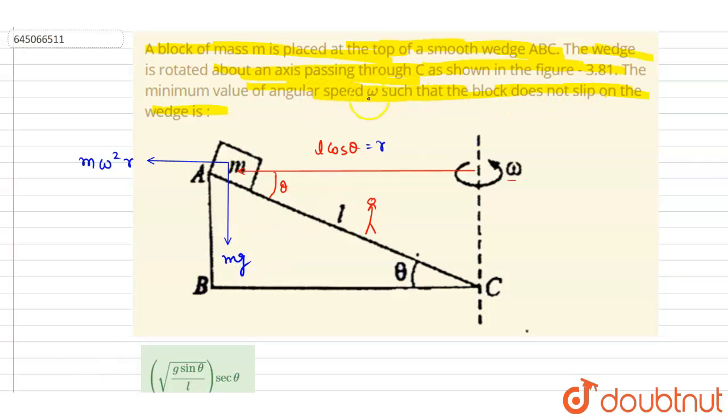Now if you see, it is given that the block does not slip on the wedge. So we don't want the block to slip on the wedge. For that, the net force along the plane should be zero. Net force along the plane should be zero. So if you see this angle is theta, this angle will be 90 minus theta. So you will get this is mg sin theta and this will be m omega square r cos theta.